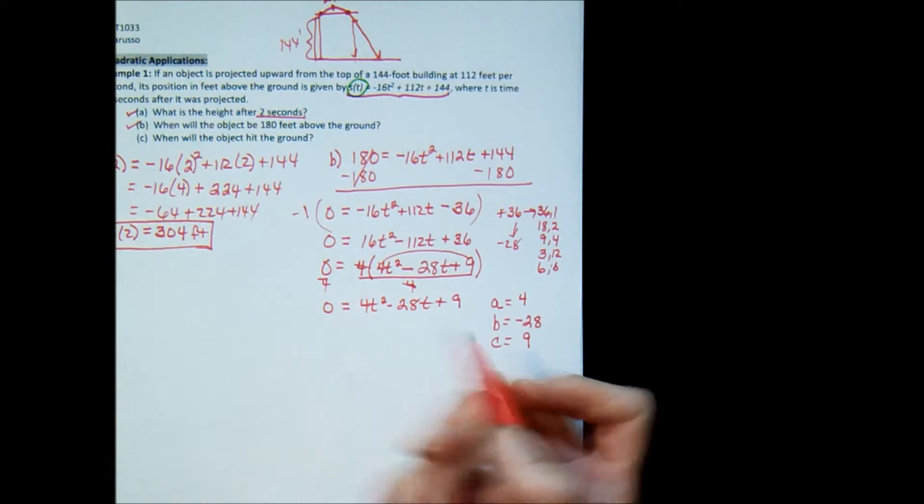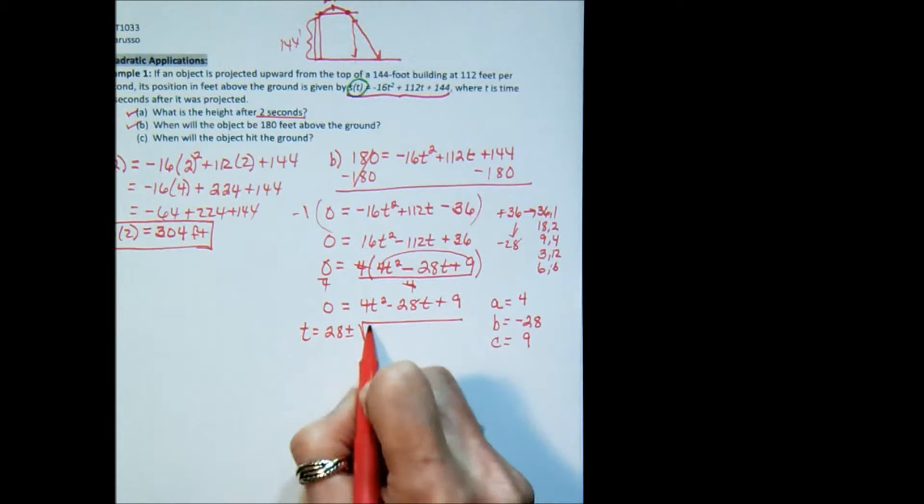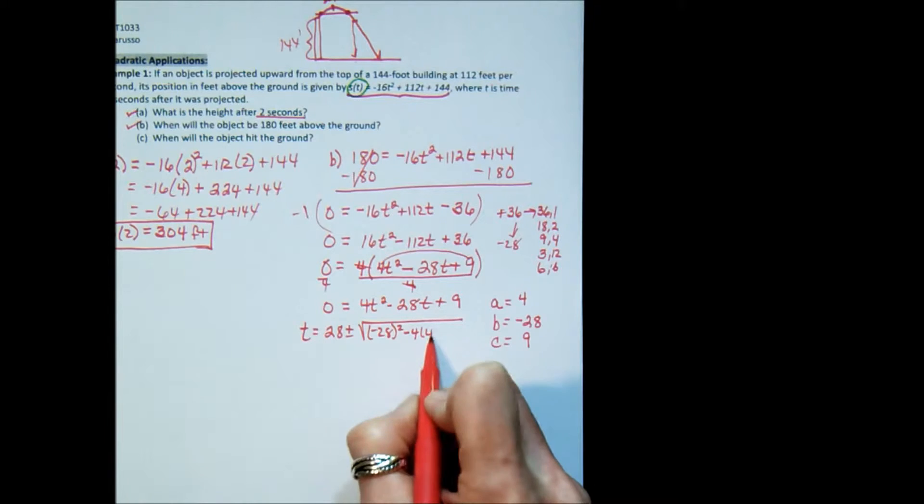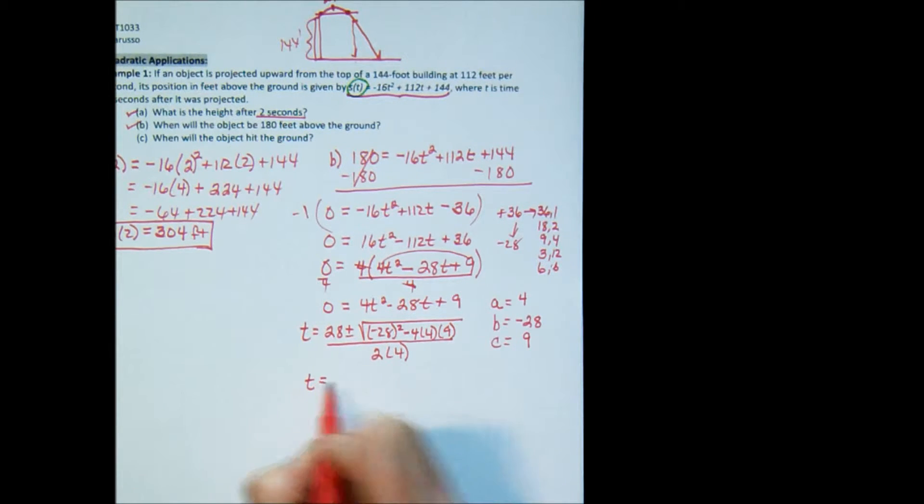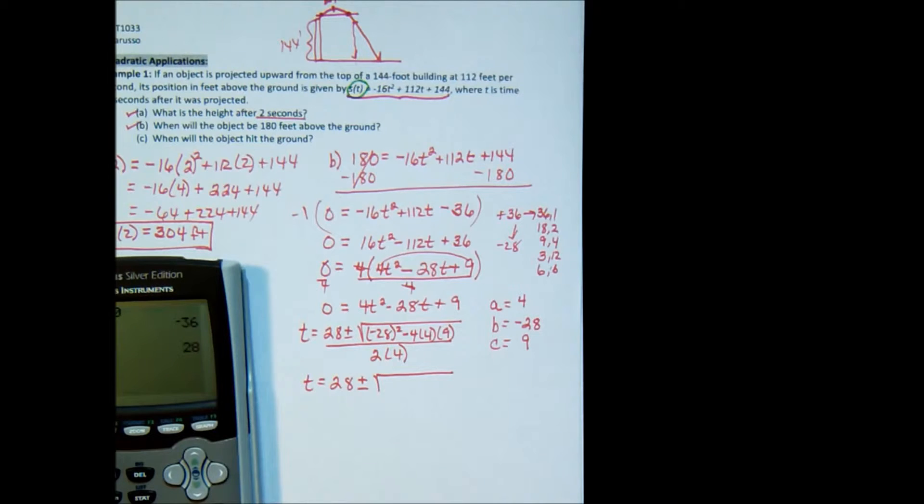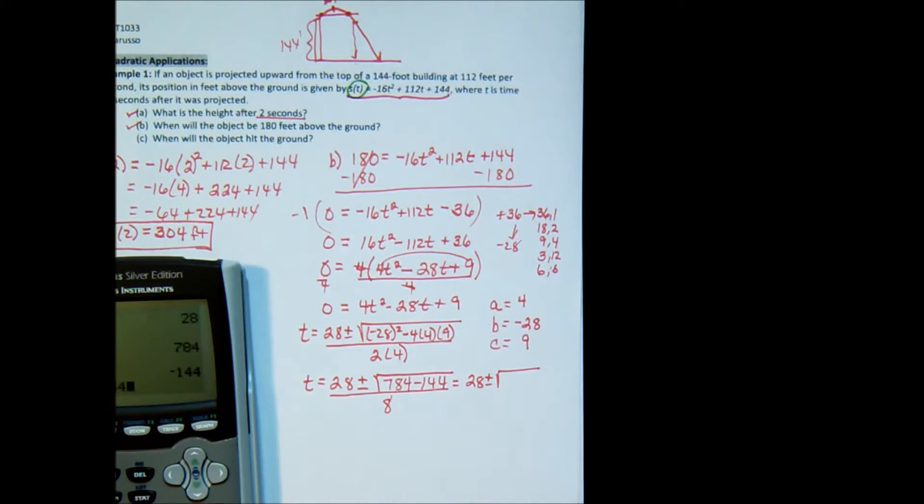Since it's equal to zero, I can do that. And now I'm going to say t equals the opposite of b plus or minus b squared minus 4ac all over 2a. t equals 28 plus or minus, now I don't know 28 squared off the top of my head, so let's 28 squared is 784, negative 16 times 9, negative 16 times 9 is minus 144 all over 8 or 28 plus or minus, we have 784 minus 144 is 640 all over 8.